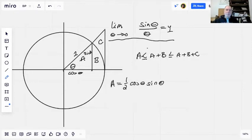Now a plus b, that's our sector, which because this is a unit circle is one half of theta.